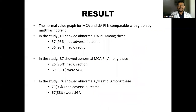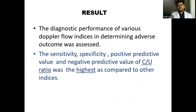In this study, 76 patients showed an abnormal cerebro-umbilical ratio. Among these, 96% had adverse outcome, as compared to individual umbilical artery and MCA PI. The diagnostic performance of various Doppler flow indices in determining adverse outcome was assessed. The sensitivity, specificity, positive predictive value, and negative predictive value of the cerebro-umbilical ratio was the highest compared to the other individual indices.